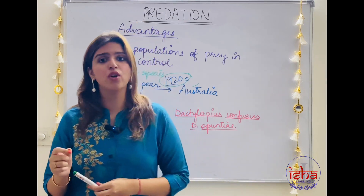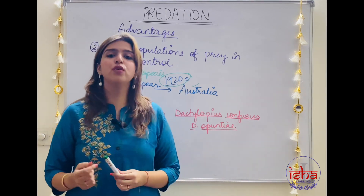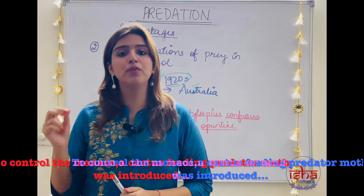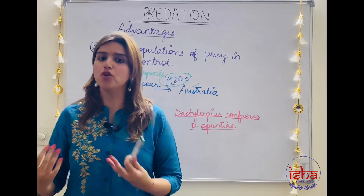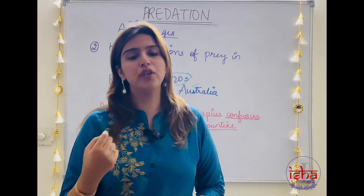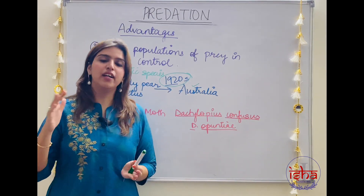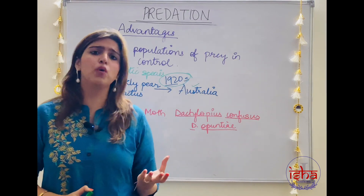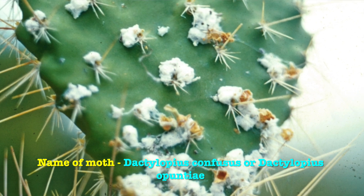It became a big menace. To stop this, the Australian government had to start a movement. A natural predator — a moth, a cactus-feeding predator — was introduced artificially into Australia. In the presence of the predator, the population of cactus came under control; the moth started feeding on the cactus and its population came down. The name of the moth was Cactoblastis cactorum. This moth was feeding on the prickly pear cactus, though it is still quite prevalent in Australia with many ongoing problems.